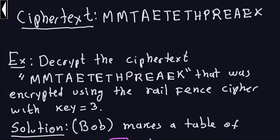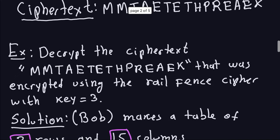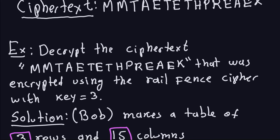Hello and welcome again. In the previous video we talked about the Rail Fence cipher, or the zigzag cipher. If you remember, the last computation we did was to include the cipher text — the encryption of some message. Now the purpose of this video is to know how to decrypt a message if you get the cipher text. You have to know the key for this. So the cipher text here is exactly the one from the previous video, encrypted using the Rail Fence cipher with a key of 3.